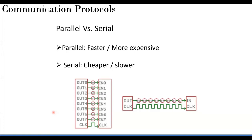In earlier desktop systems you could find a parallel port — printing actually started using parallel ports. Nowadays you won't see that; it has disappeared even from desktops. It was an interesting high-speed interface. Now, for the serial option, you essentially serialize the data and transmit one bit at a time.